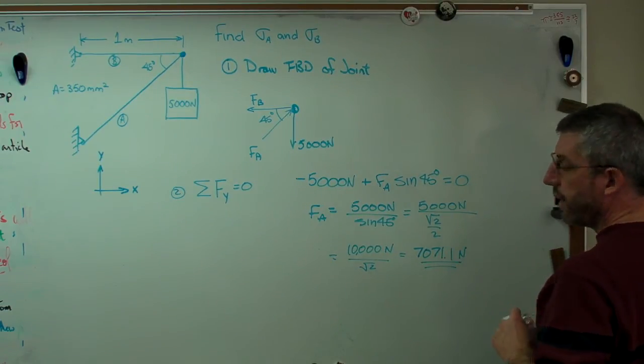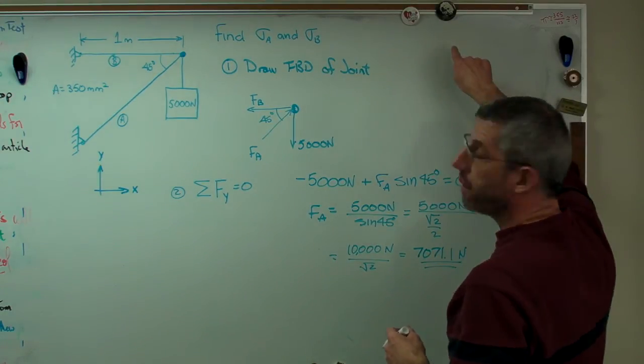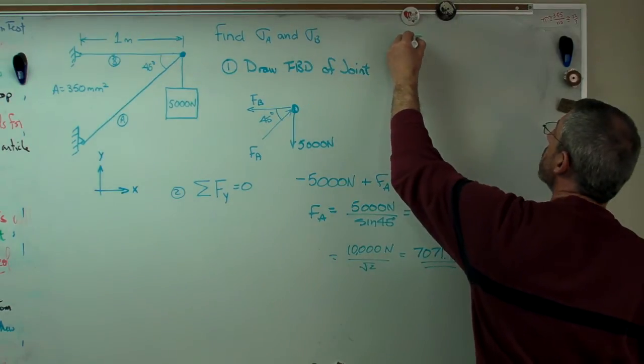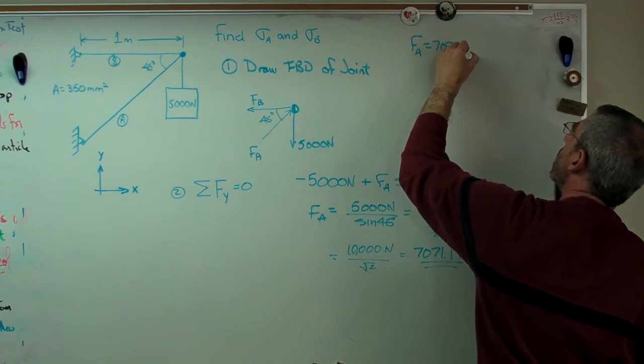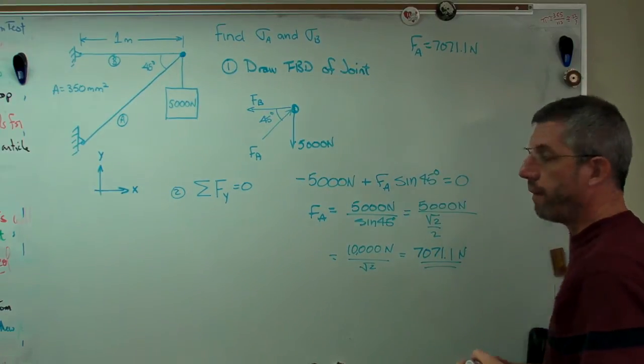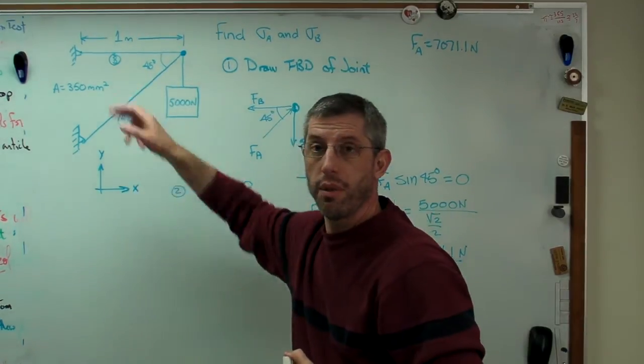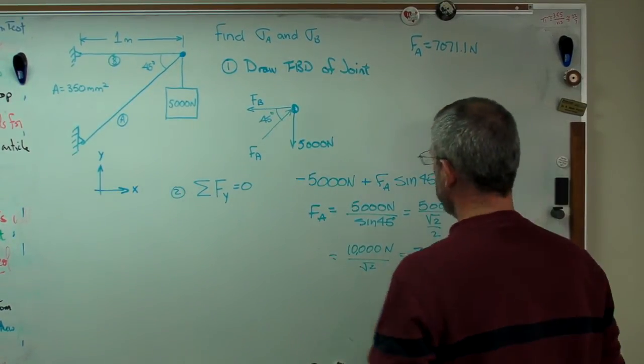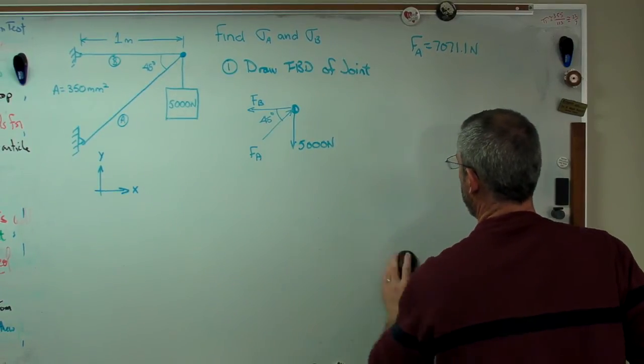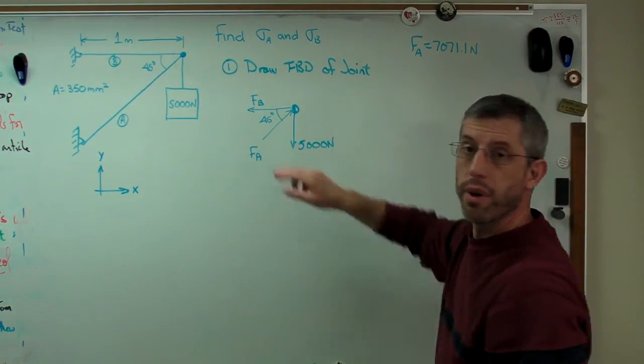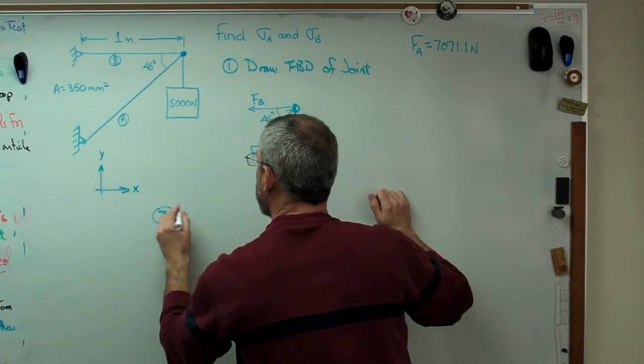So that's 10,000 newtons divided by approximately 1.414. If you do that, you get 7071.1 newtons. Okay, that's FA. Now, I don't have a lot of room on this little board, so I'm going to write my intermediate answers up here. This is my storage space, I guess. So there's one. Next thing we're going to have to do is figure out the force in element B. We know A, so we've got a good start. And I'm going to erase this.